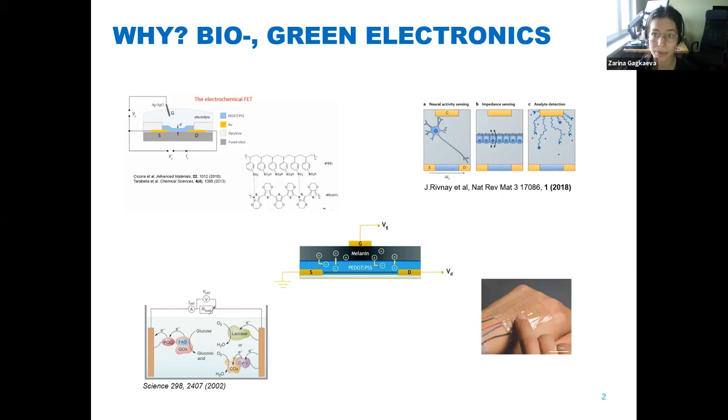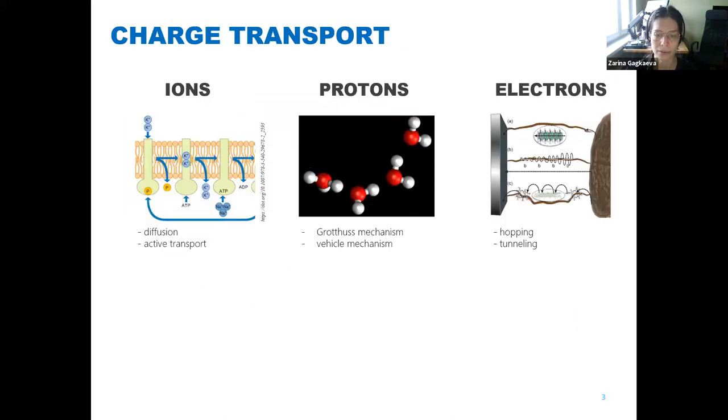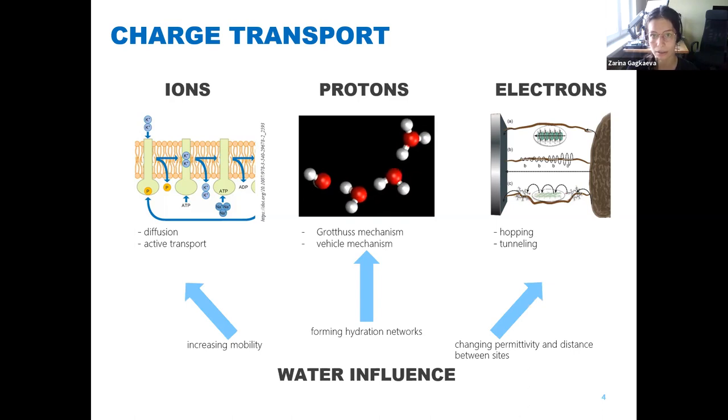The problems are in the questions of charge transport, because there are different types of charge transport in biological materials and different charge carriers such as ions, protons and electrons. The main thing researchers have to deal with is the influence of water on every type of transport, because water is inevitable for functioning of every biological material. One should take into account its influence on charge transport such as diffusion or hopping or, as in case of protons, Grotthuss mechanism shown here.